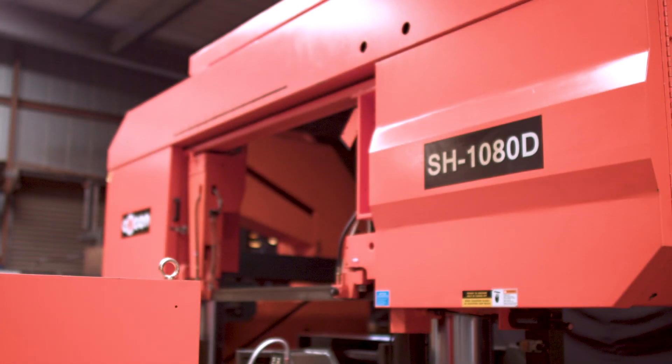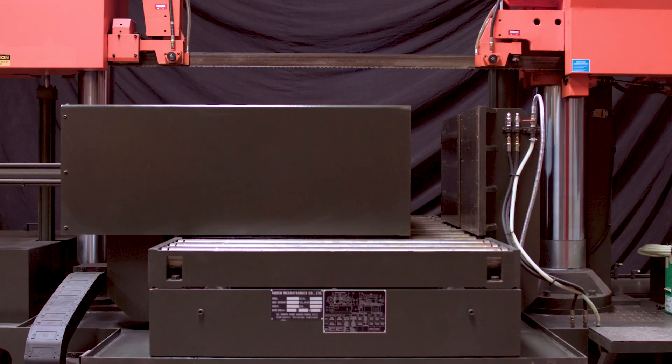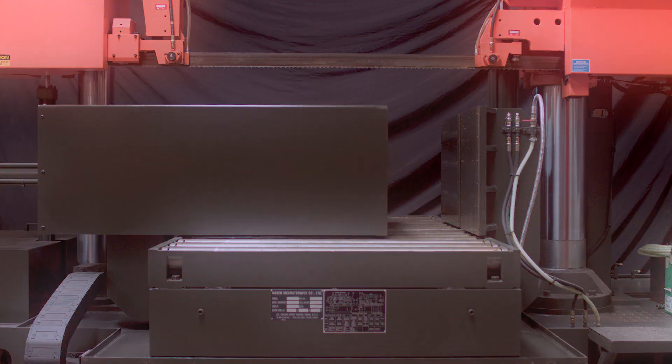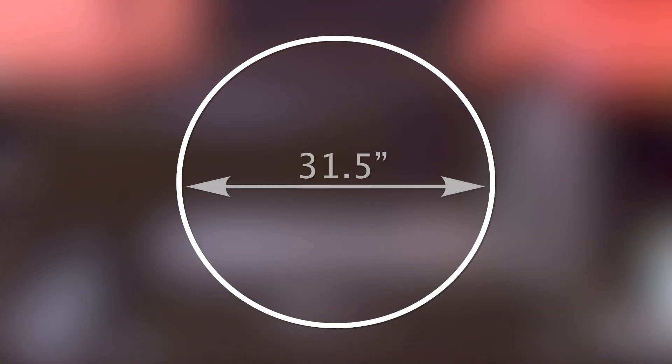Part of Cozen's billet saw line, the 1080D is designed to cut larger materials and has a round capacity of 31.5 inches and a rectangular capacity of 31.5 inches high by 40 inches wide.